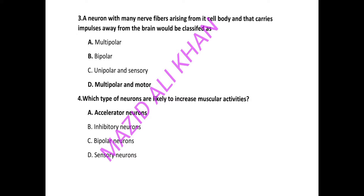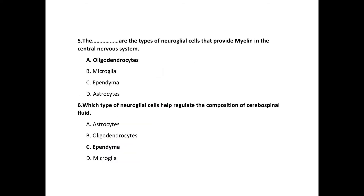that carries impulses away from the brain would be classified as — the correct choices are multipolar and motor. Next question: which type of neurons are likely to increase muscular activities? The correct choice is excitatory neurons. The blank are the types of neuroglial cells that provide myelin in the central nervous system — the correct choice is oligodendrocytes.